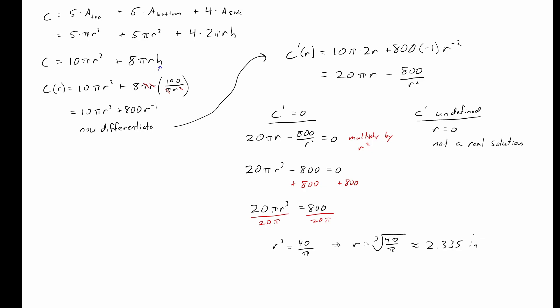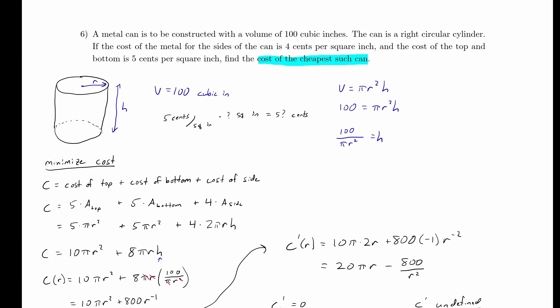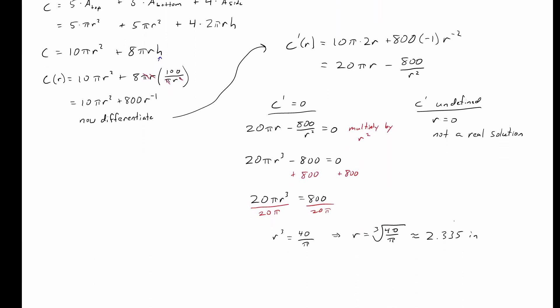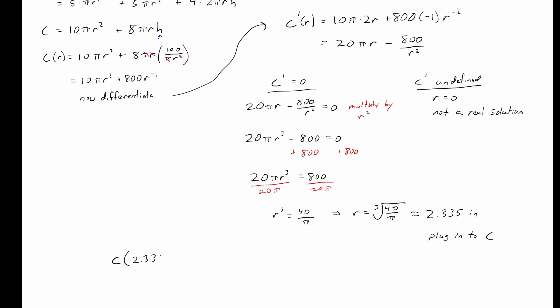Remember our units are inches. Plugging r approximately 2.335 back into our cost function gives approximately 513.899 cents. Rounding to the nearest whole cent, that's about 514 cents, or five dollars and fourteen cents. That's the cost of the cheapest can that can be made — though the materials costs do seem a bit high.